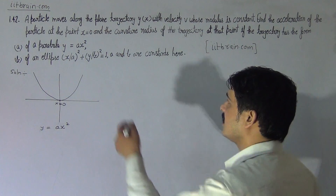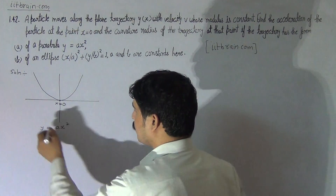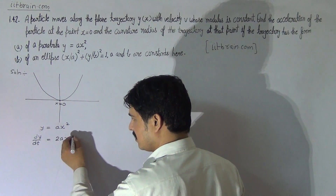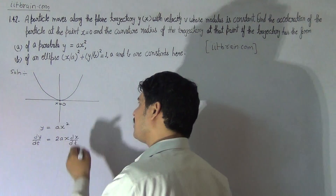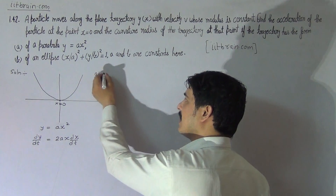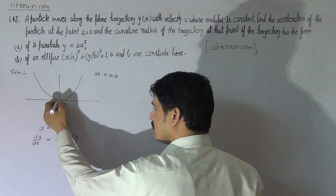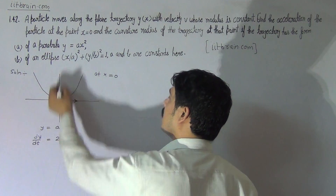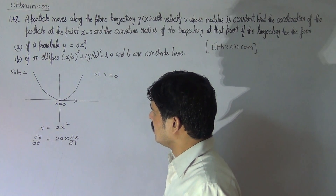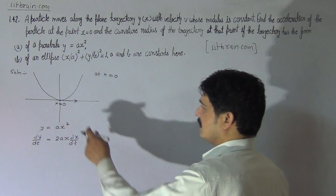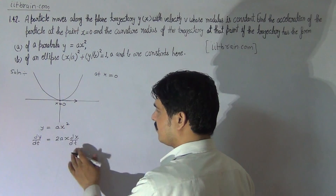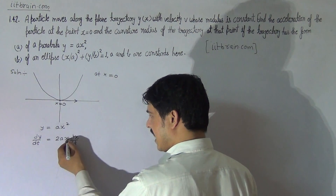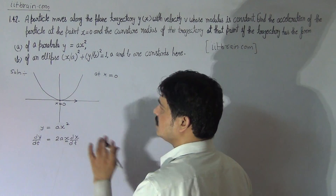If the trajectory equation is y equal to ax squared, differentiate with respect to time. It will be dy by dt equal to 2ax times dx by dt. By the diagram, we see that at x equal to 0, if we consider this point x will be 0, so dy by dt will be 0 at this point.